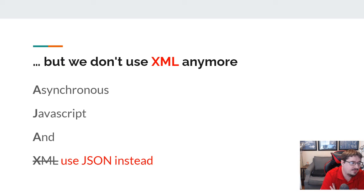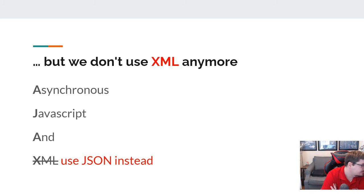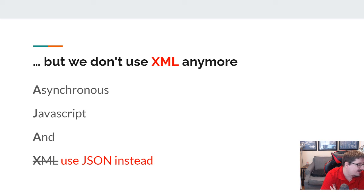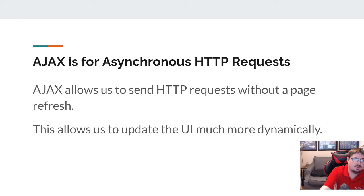Nowadays we'll still talk about AJAX, but we don't really use the X anymore — we don't really use XML anymore. We basically replace that with JSON instead. As it turns out, that's not a huge difference because AJAX was never really designed to send XML back and forth — it was actually designed to send text back and forth. JSON is still text, so it works pretty much flawlessly. JSON is a lot easier to work with than XML, and it's also a lot smaller.